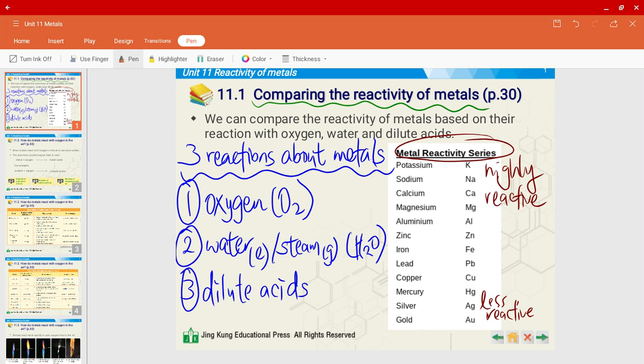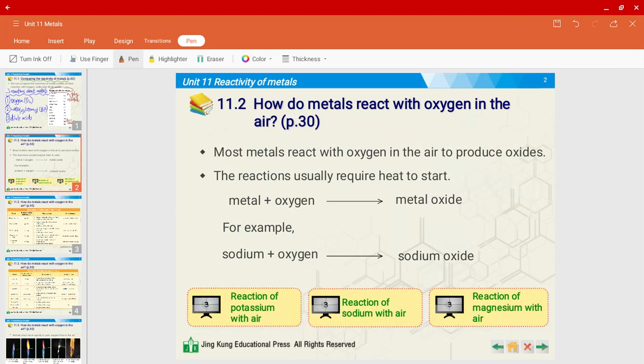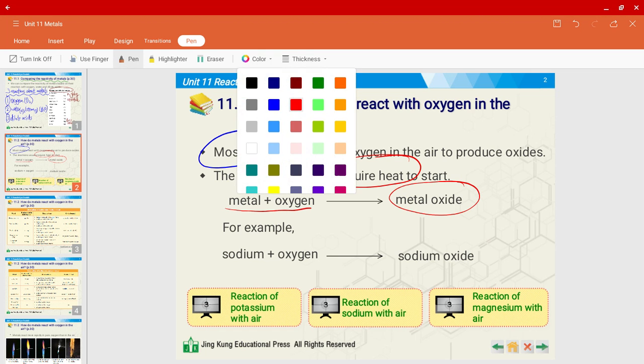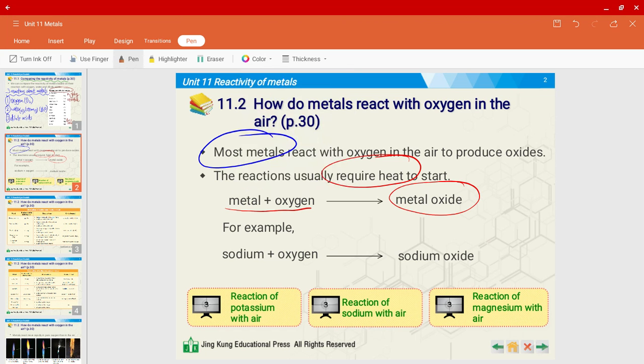All right, so let's talk about the first one, reactions of metals with oxygen. So most metals, not all, react with oxygen in air to produce oxides. Let's have a look at the word equation. You have a metal plus oxygen reacting to form metal oxides and usually this reaction would require heat to start.